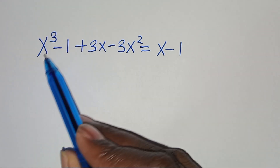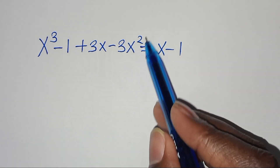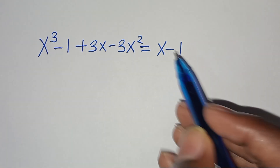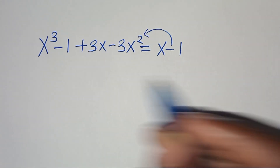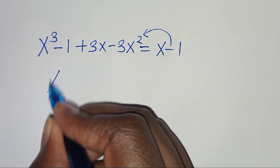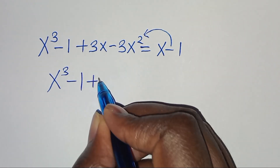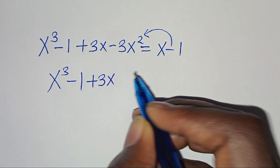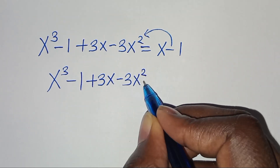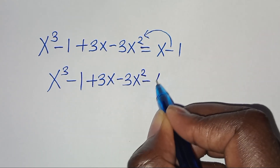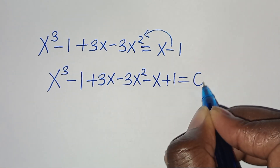Now, we have x to the power of 3 minus 1 plus 3x minus 3x squared, this is equal to x minus 1. So let's take x minus 1 on the left-hand side, so that we have x to the power of 3, subtract 1 plus 3x, then subtract 3x to the power of 2, then minus x, then plus 1, this is equal to 0.